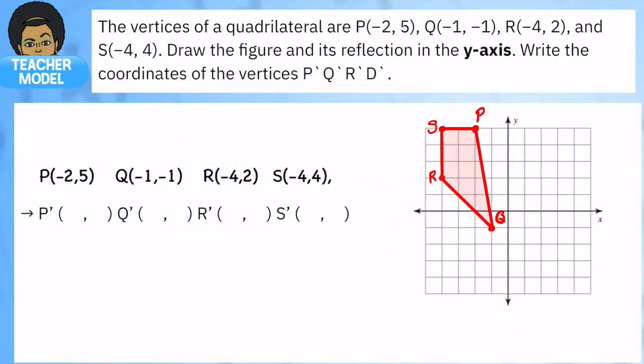Let's look at this example. And here we have a quadrilateral named PQRS. I've already drawn out the figure so you can see it. And our goal is to draw the figure, which I've already done, and its reflection over the y-axis. So take a moment so you can just copy down the figure itself and its points.